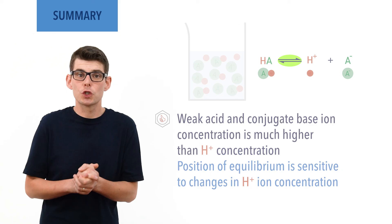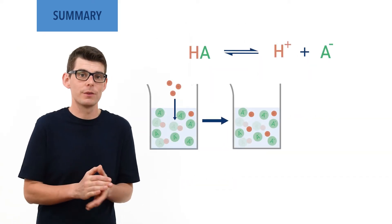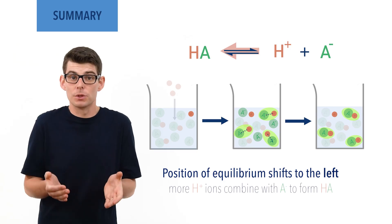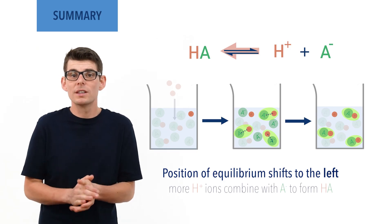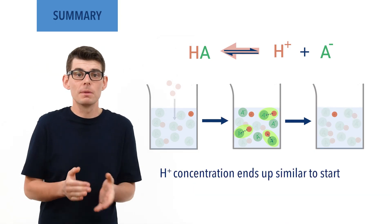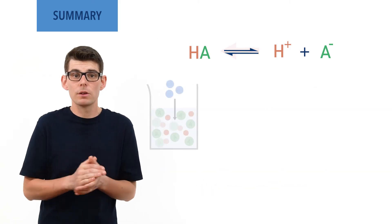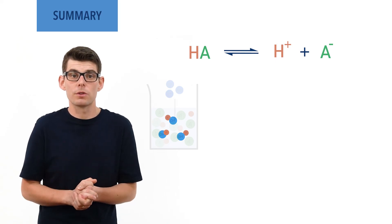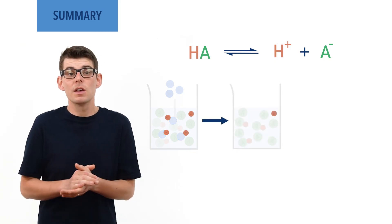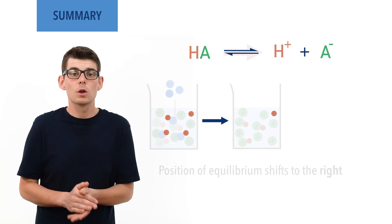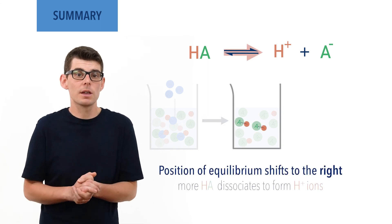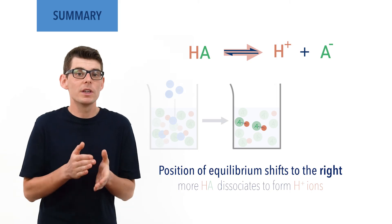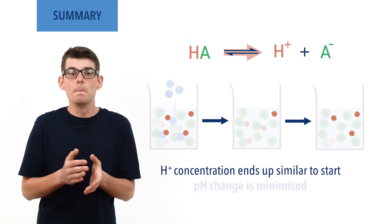If H⁺ ions are added to the buffer solution, the position of equilibrium shifts to the left, meaning the extra H⁺ ions combine with conjugate base ions and form weak acid molecules. As a result, the final H⁺ ion concentration ends up similar to the initial concentration, minimizing a change in pH. If hydroxide ions are added, they combine with H⁺ ions in the solution and form water molecules, causing H⁺ ion concentration to decrease. As a result, the position of equilibrium shifts to the right, causing more acid molecules to dissociate and replace the H⁺ ions that reacted with hydroxide ions, keeping the H⁺ ion concentration similar to its initial value and minimizing a change in pH.